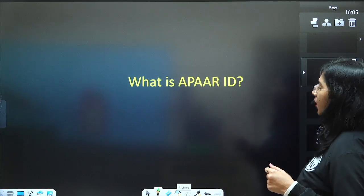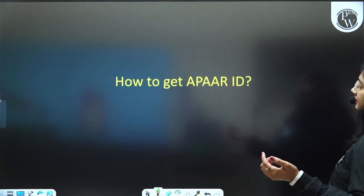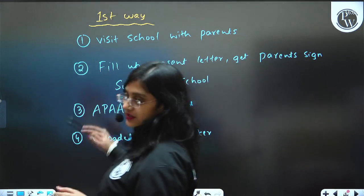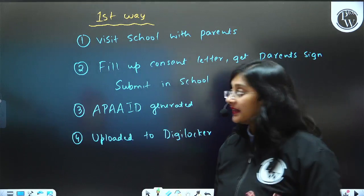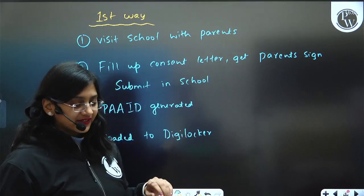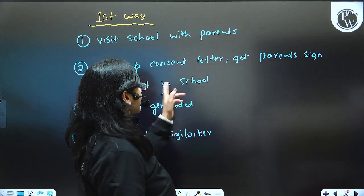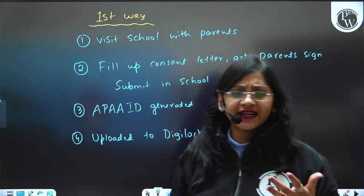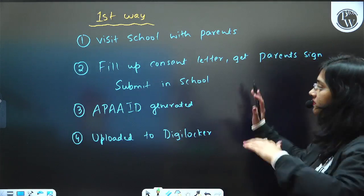Now coming to Apar ID — it's a 12-digit number. There are two options to get this Apar ID. The first way is through your school. You have to visit the school with your parents, and they will ask your parents to fill a consent form confirming they agree to generate your Apar ID. After submitting that to the school, the school will generate the Apar ID, which will later be uploaded to the DigiLocker app.